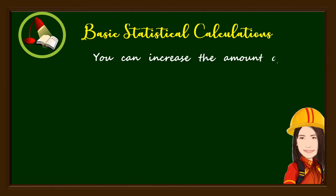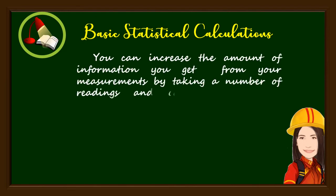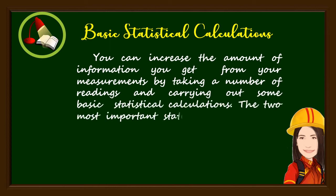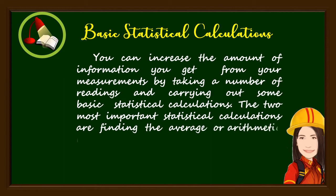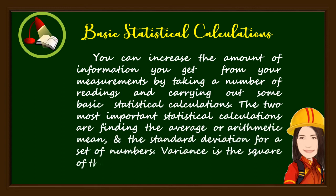You can increase the amount of information you get from your measurements by taking a number of readings and carrying out some basic statistical calculations. The two most important statistical calculations are finding the average or arithmetic mean and the standard deviation for a set of numbers. Variance is the square of the standard deviation.